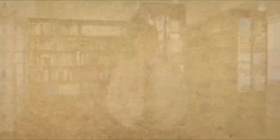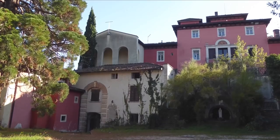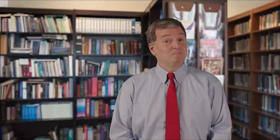'Trust yourself to his merciful heart and to my sister Faustina.' The Holy Father sent Ugo to the Villa O Santissima in northern Italy, where there was a shrine to Divine Mercy. For three days, he joined in community prayer. He was finally able to forgive his birth mother and thank her for the gift of life.